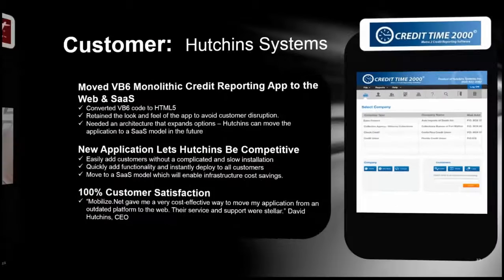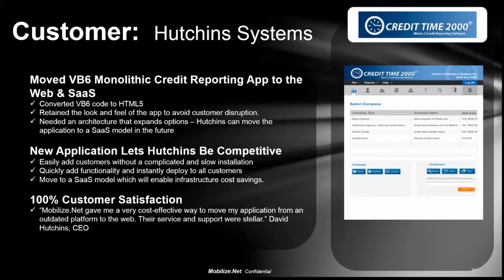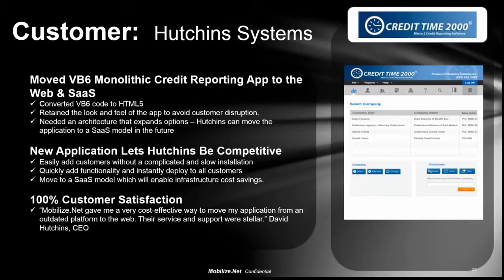A similar customer was Hutchins Systems, with a credit reporting application for car dealers to check available credit and loan products for customers in the showroom. Their application was also VB, monolithic, with the same deployment, training, and configuration issues with a non-technical audience. They wanted to move to a SaaS subscription model. By converting the VB code to HTML5 using WebMap, they avoided any disruption or retraining requirement — the tab order, forms, and application structure remained faithful to the original — while opting for a more modern look and feel. This allowed them to create a SaaS model very quickly compared to trying to do it from scratch.